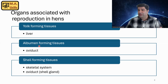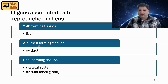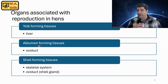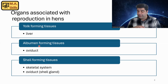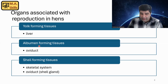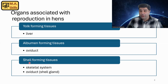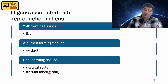The ovary is responsible for producing and releasing the egg yolk, but after that the oviduct is responsible for putting albumen around the egg yolk, putting the eggshell on, and finalizing egg formation. In terms of shell formation, it is the shell gland — part of the oviduct — that is responsible for this process.